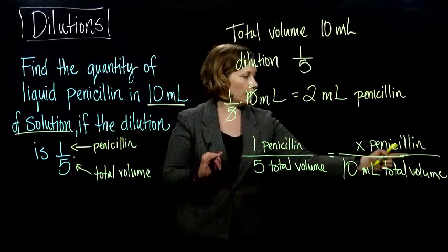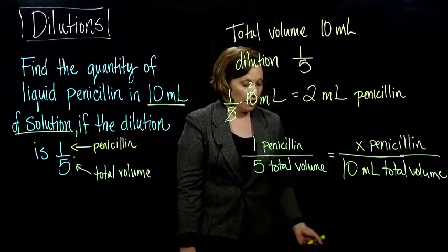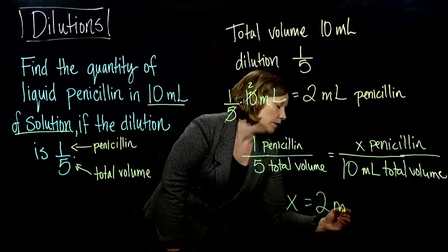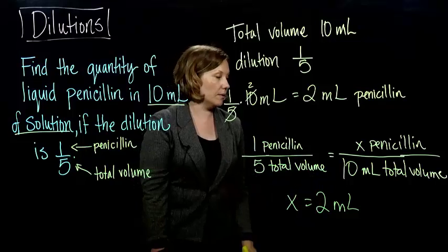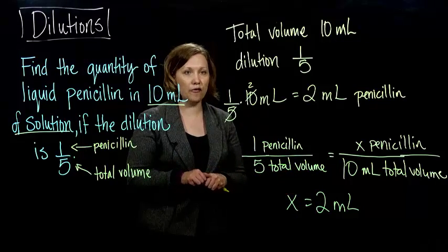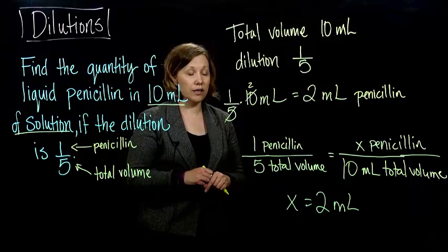Multiply on both sides by 10, you will end up with x equals 2 milliliters. Same thing we got up there. So we're going to have 2 milliliters of penicillin and we are done.